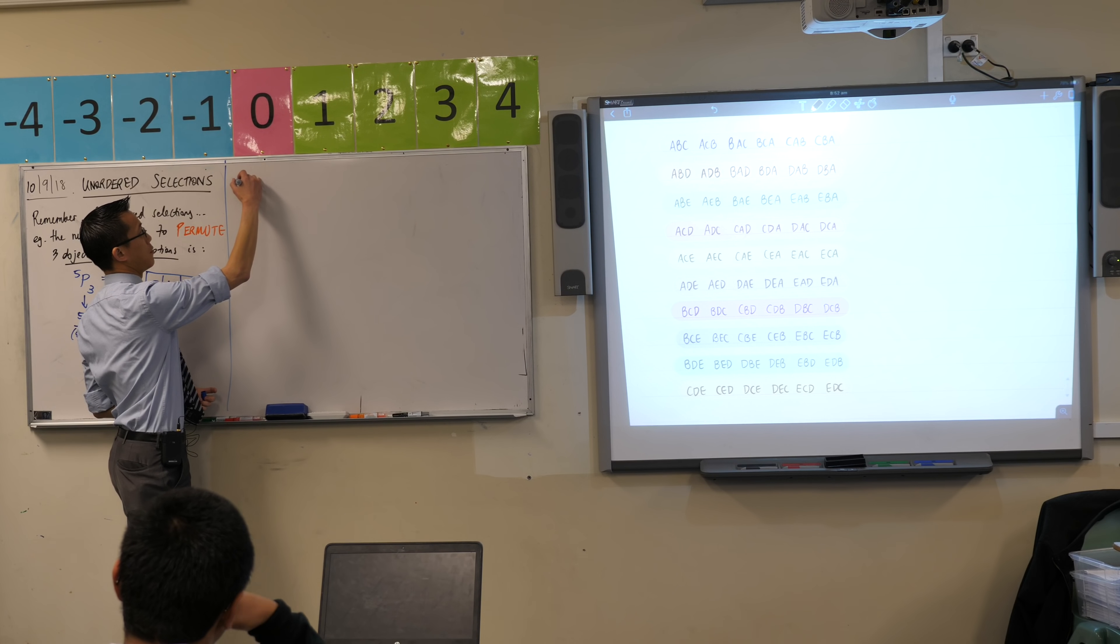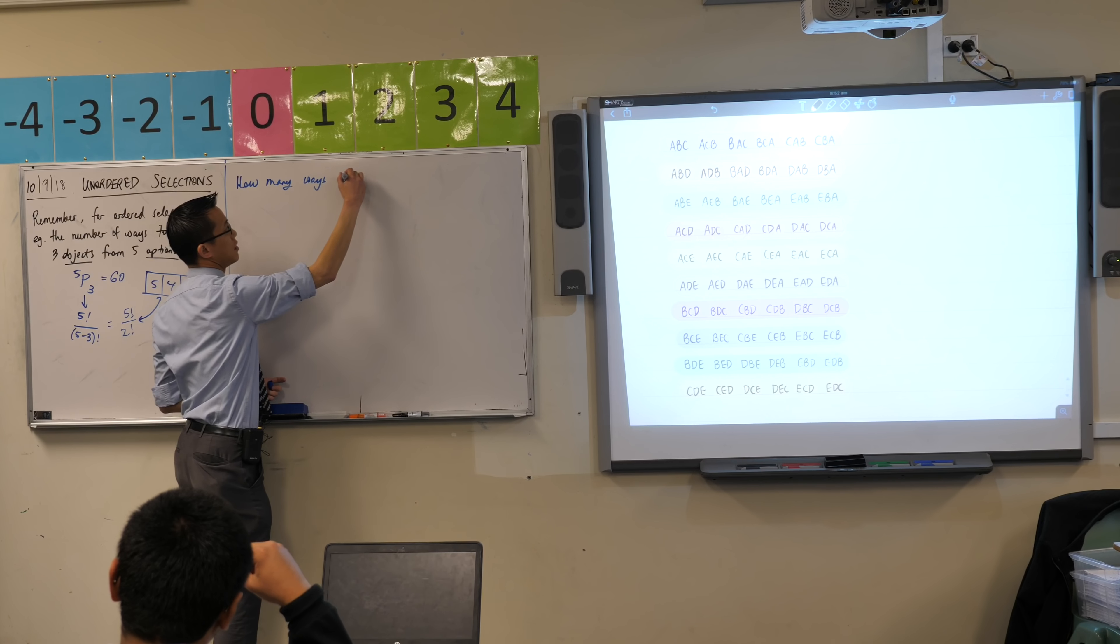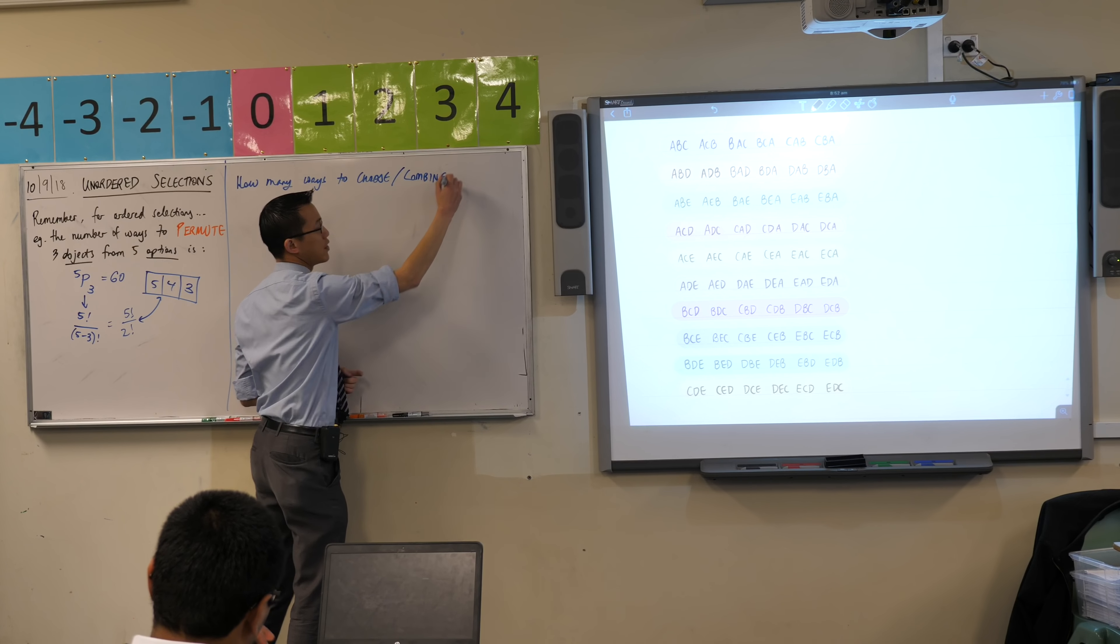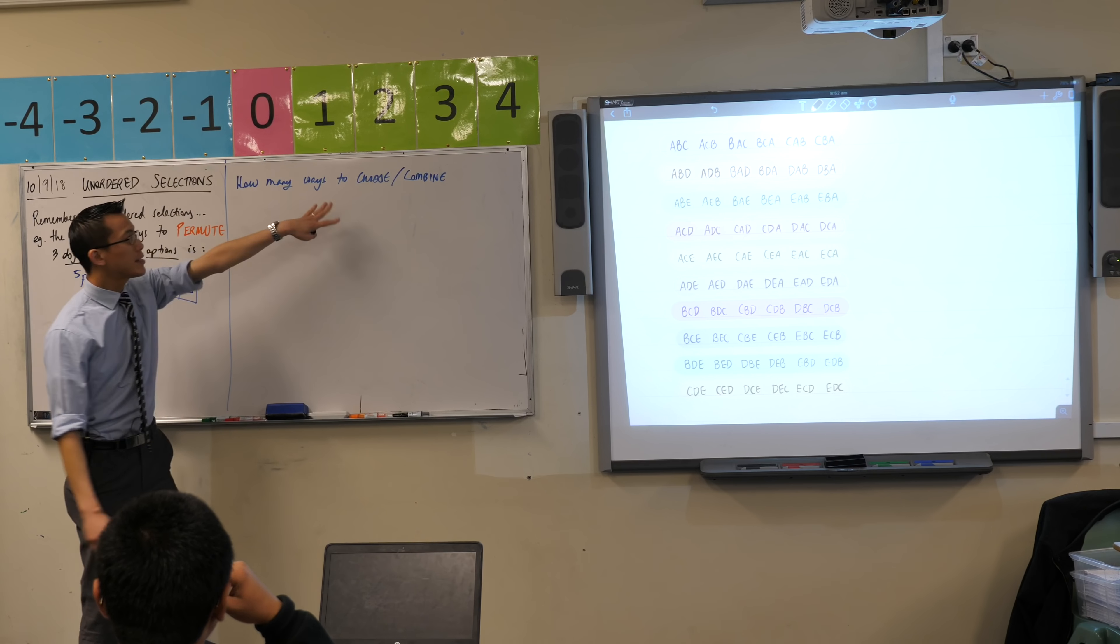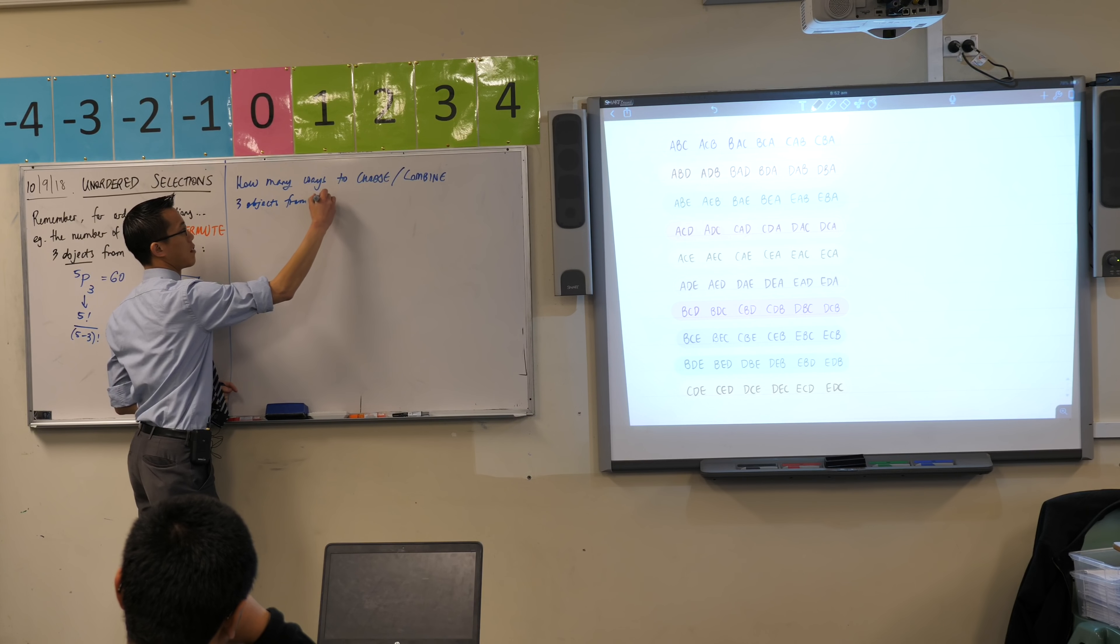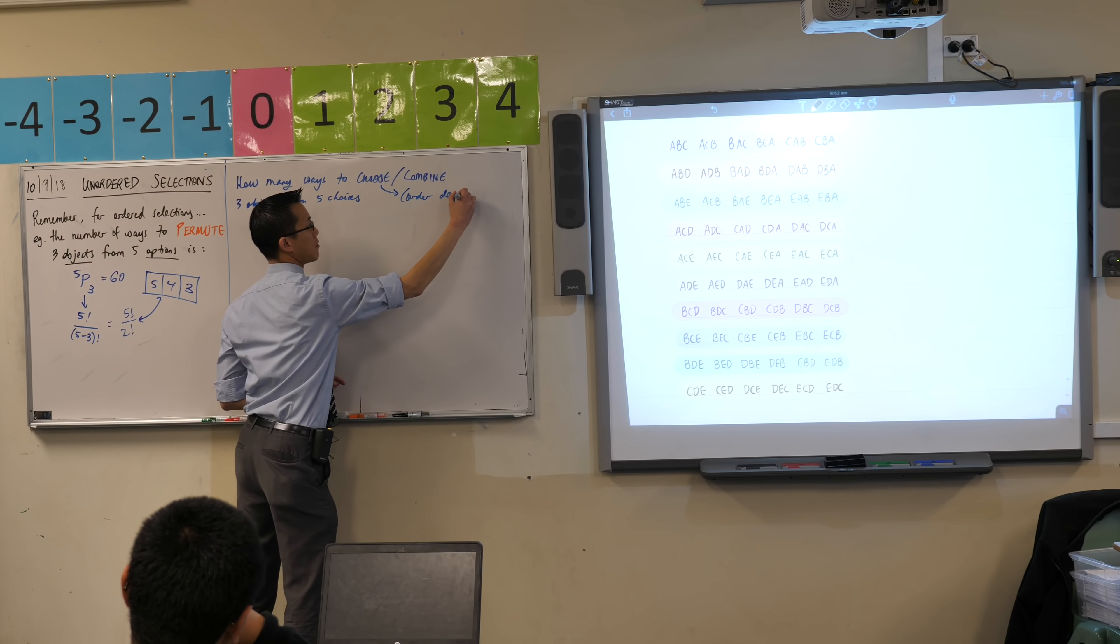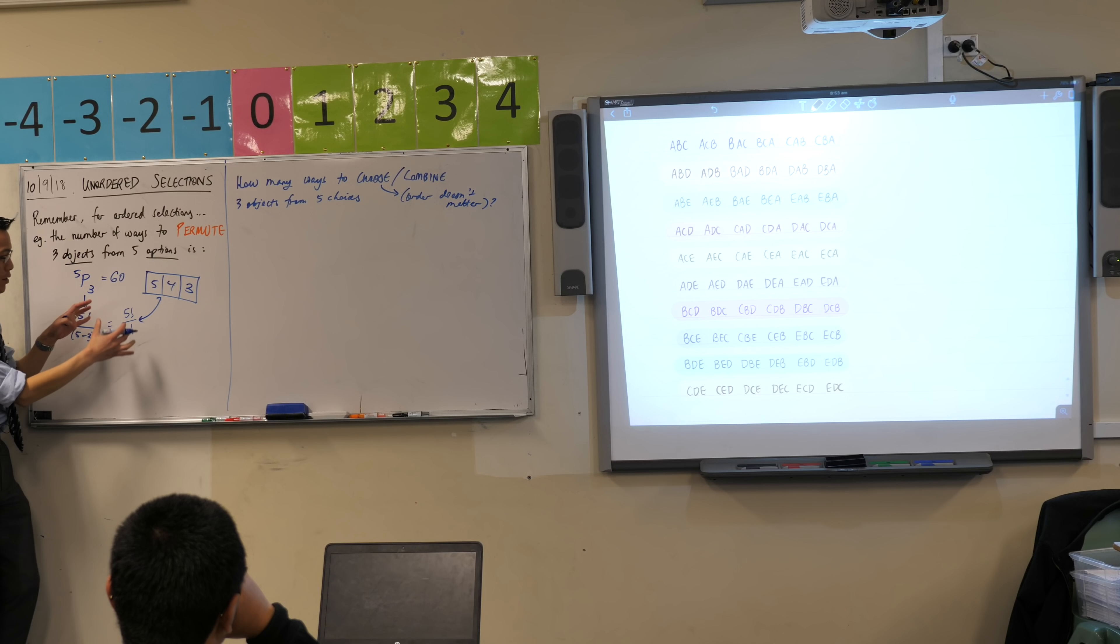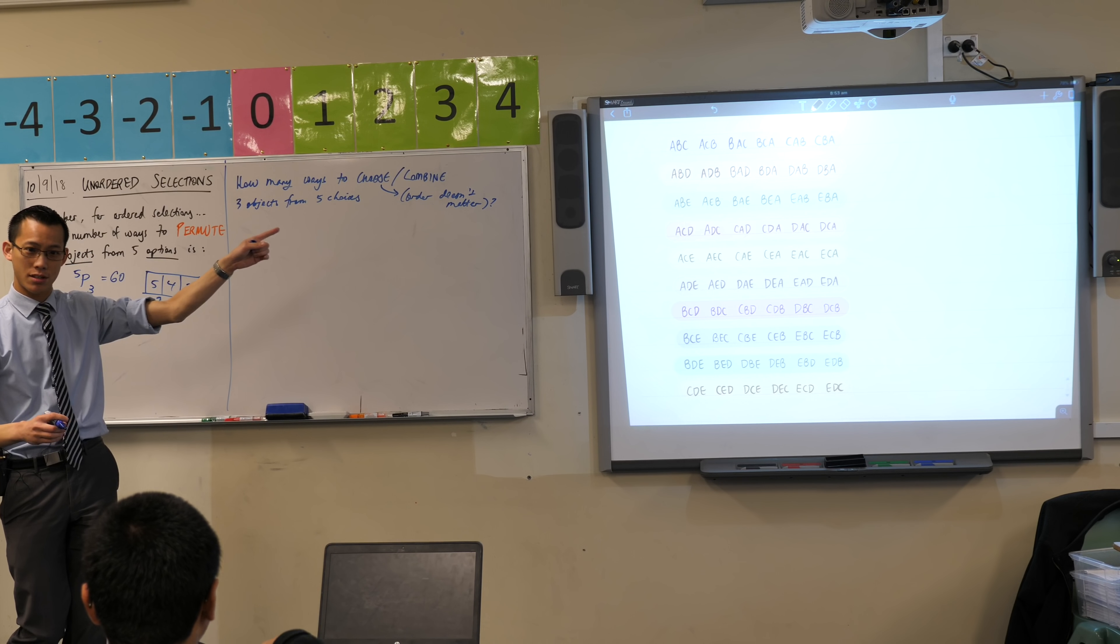If I now asked you, what's the number of ways to choose three objects from five options where order doesn't matter? I'm even going to write that. How many ways to choose? You could also use the word combine because when you combine things like in a salad, the order doesn't matter, right? You just kind of throw them in the bowl and there they are. How many ways are there to choose or combine three objects from the same five choices? And this part here means order doesn't matter.